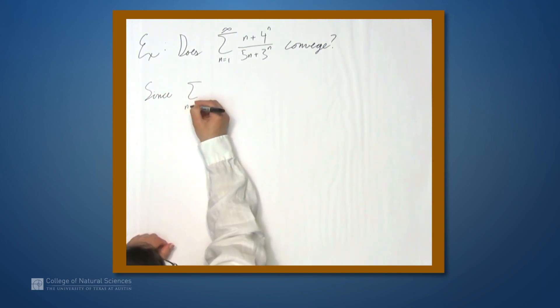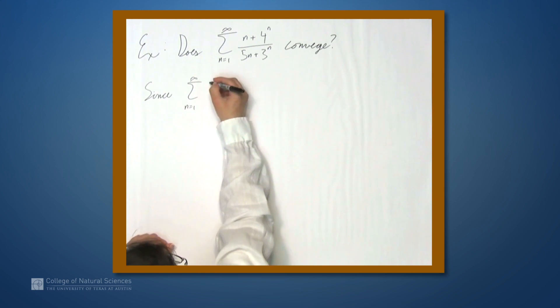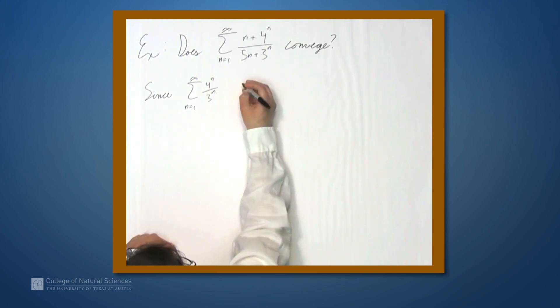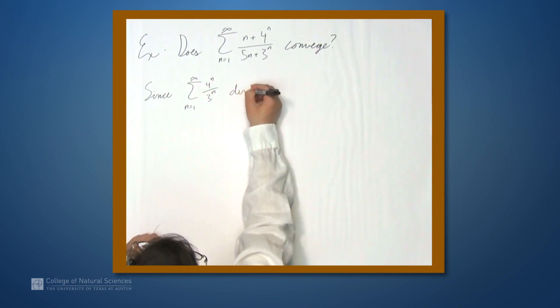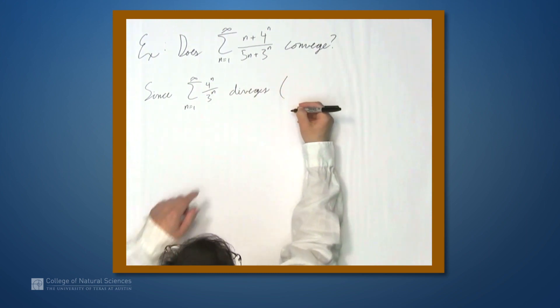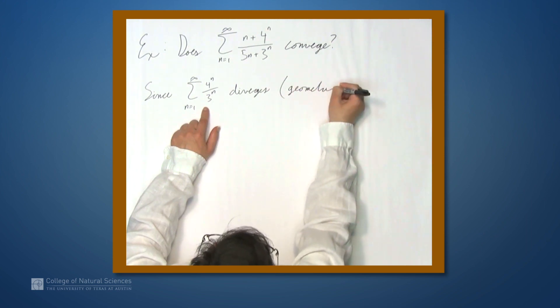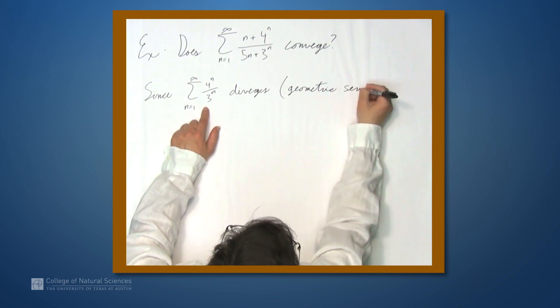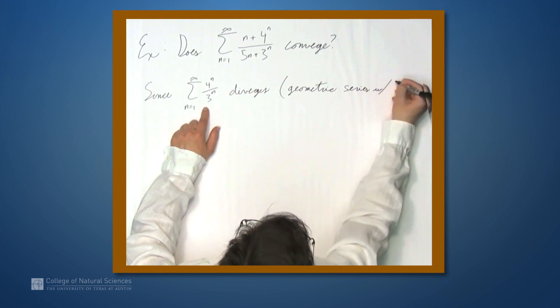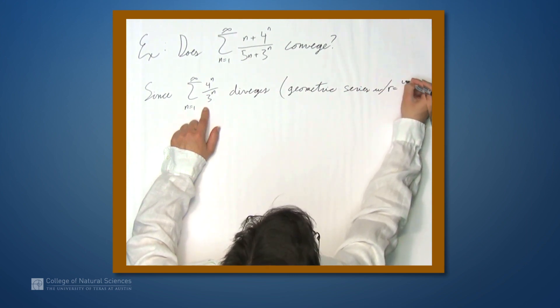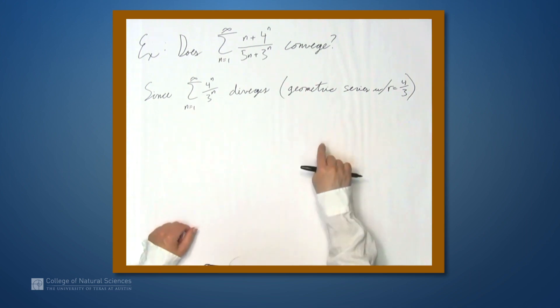Since the sum from n equals 1 to infinity, 4 to the n over 3 to the n diverges, this is a geometric series whose ratio is 4 thirds. And the ratio being larger than 1, greater than or equal to 1 means the geometric series diverges. So since this diverges,